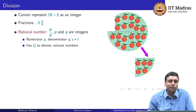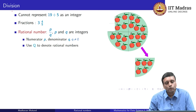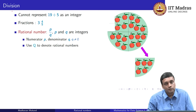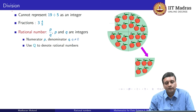Just like we had the symbols N and Z to represent the natural numbers and the integers, we have a special symbol for the rational numbers, which is a Q. To indicate it is special, we write double lines on the sides. This Q with the fat boundaries denotes the rational numbers.